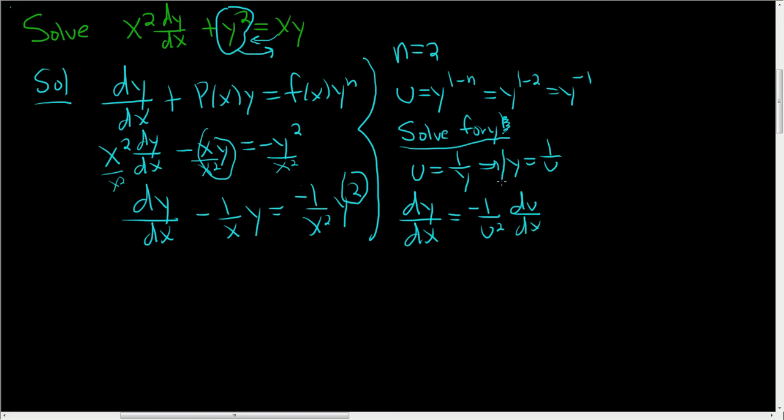All right, at this point we're going to substitute y and dy/dx into our differential equation. After we do that it's going to become a linear differential equation and we can solve it using the methods we use for first order linear differential equations. All right, be really careful in this step. So dy/dx, it's right here, is going to be this. All right, so this is negative 1 over u² du/dx.